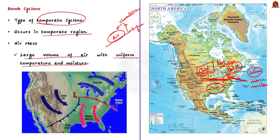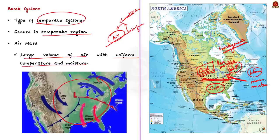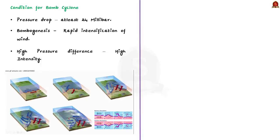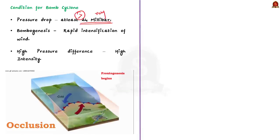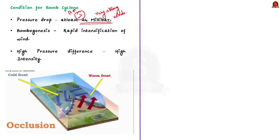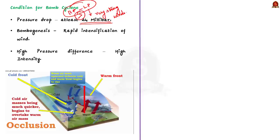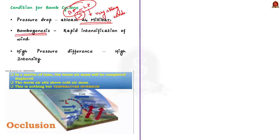This process of formation of fronts is called frontogenesis. When pressure drops along the front, the warm air moves northwards and the cold air moves towards the south. Due to the Coriolis force, the motion is in anti-clockwise direction. This is how a temperate cyclone originates in normal conditions. In some special cases, when the pressure drop is very significant — that is, when the pressure difference between high and low pressure areas is above 24 millibars — we experience very strong winds. The speed of wind rapidly increases, and this process of rapid intensification is called bombogenesis, which leads to a bomb cyclone.